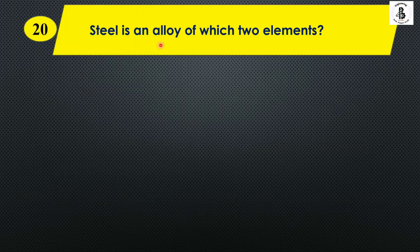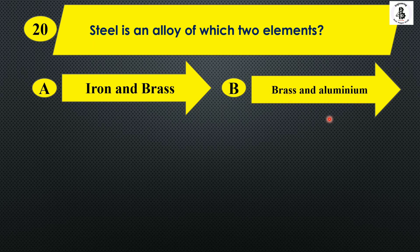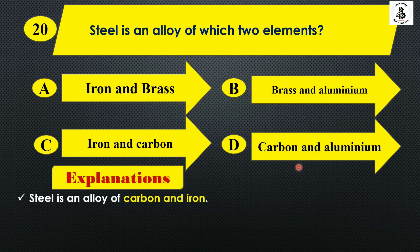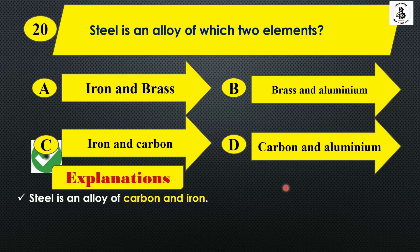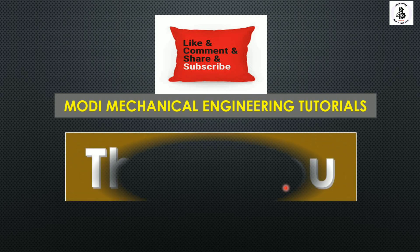Steel is an alloy of which two elements? Option A: iron and brass, Option B: brass and aluminium, Option C: iron and carbon, and Option D: carbon and aluminium. Steel is formed by the alloying of carbon and iron — you may remember the iron-carbon diagram covering categories of steel and cast iron. By mixing carbon into iron up to 2%, steel is formed — it is the interstitial solid solution of carbon in iron up to 2%. So the right answer is Option C, iron and carbon. I hope you understood all questions — if you liked this, subscribe and share for more mechanical engineering tutorials. Thank you so much and keep watching.